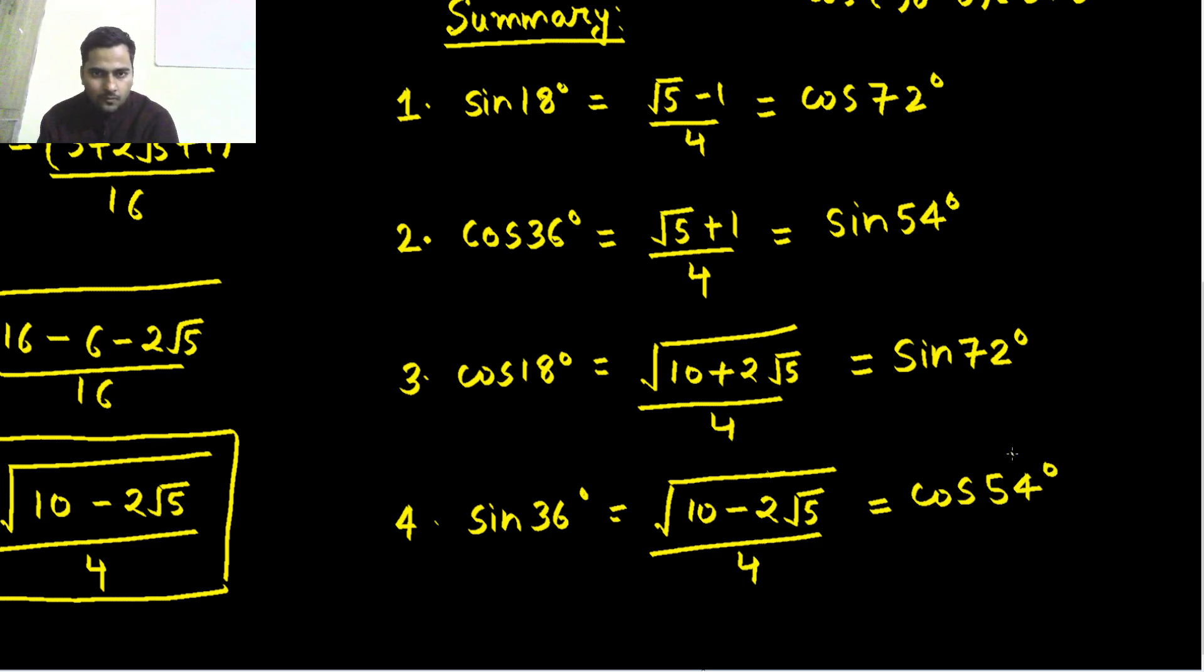So we learned 8 different values and I would say just remember one, you can derive anything, any of the 8 from this. Because from here you can move to cos 36 value. Cos 36 if you know, you can move to sin 54. If you know sin 18, you can say this is equal to cos 72. Cos 18 if you know, then sin 72 is equal to this. So you can do this type of arrangements for you. And this is the summary.